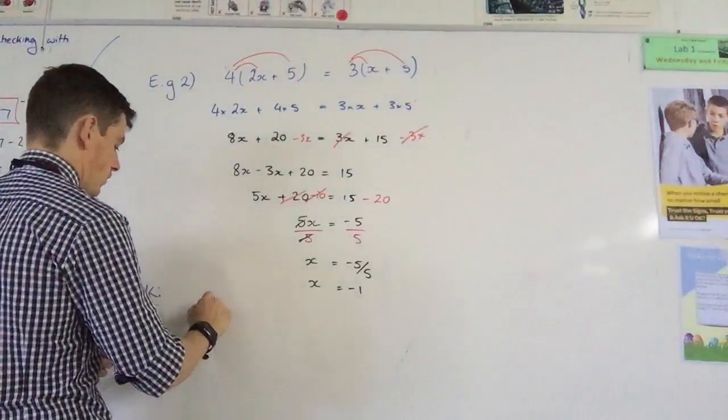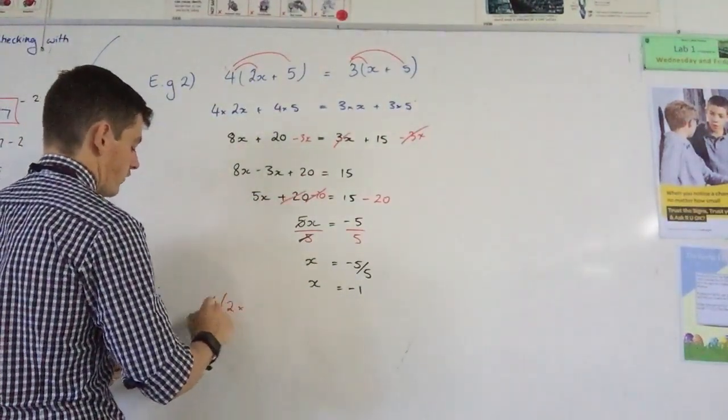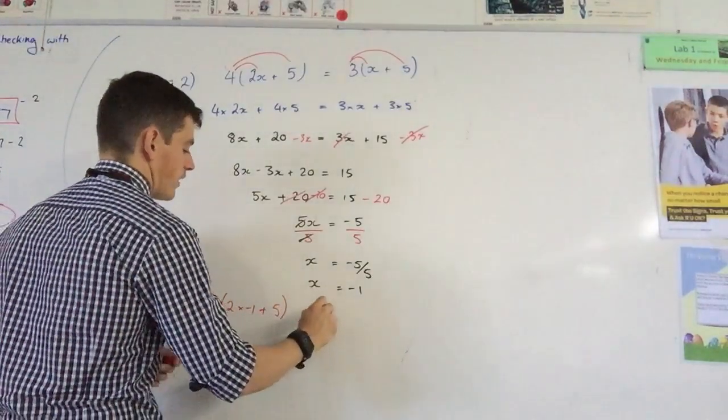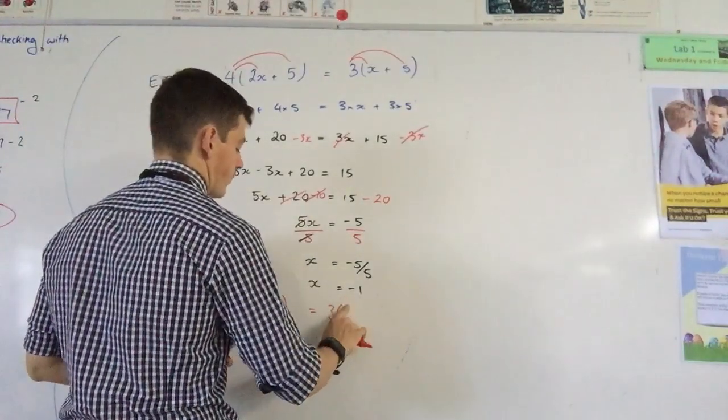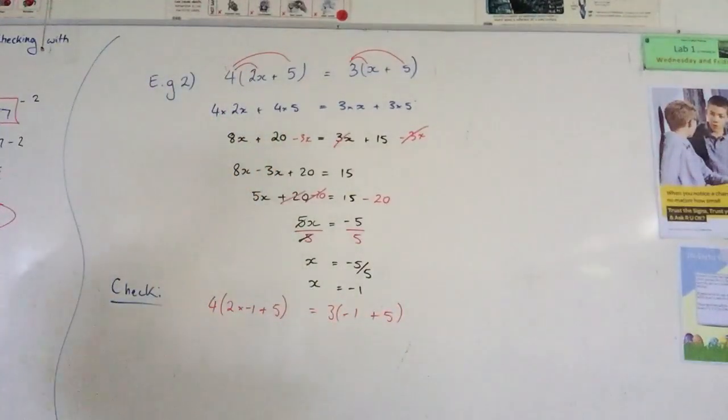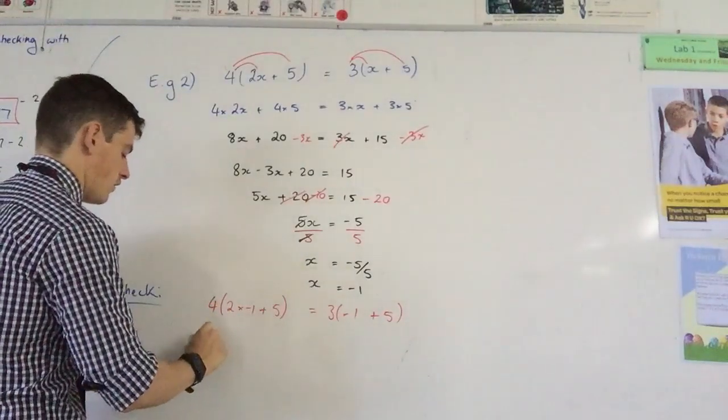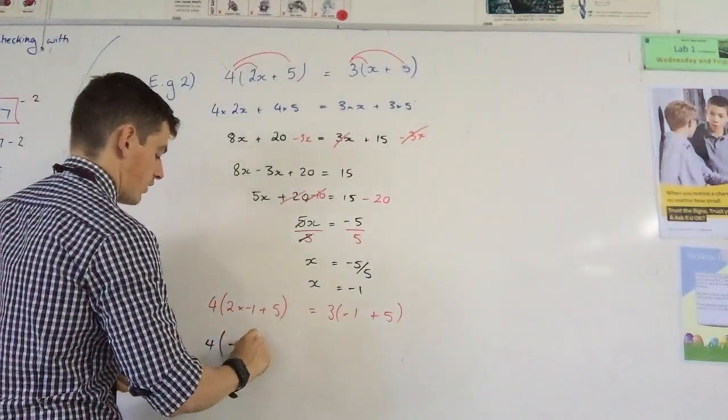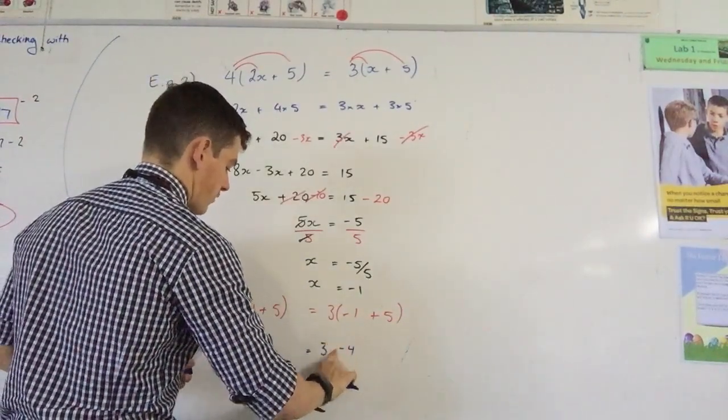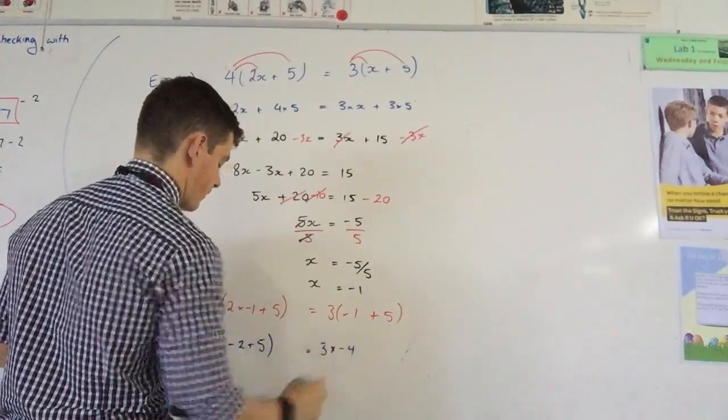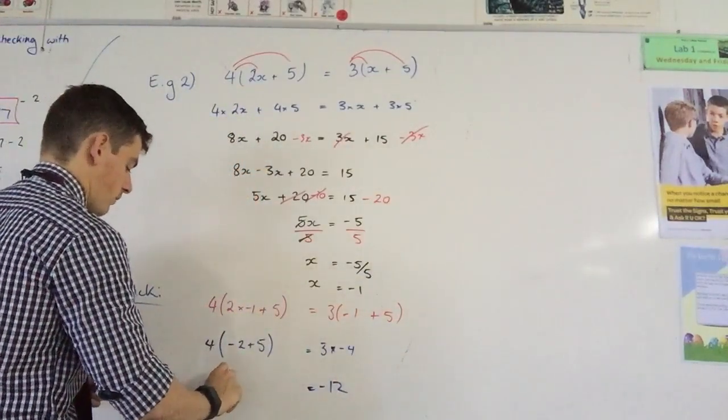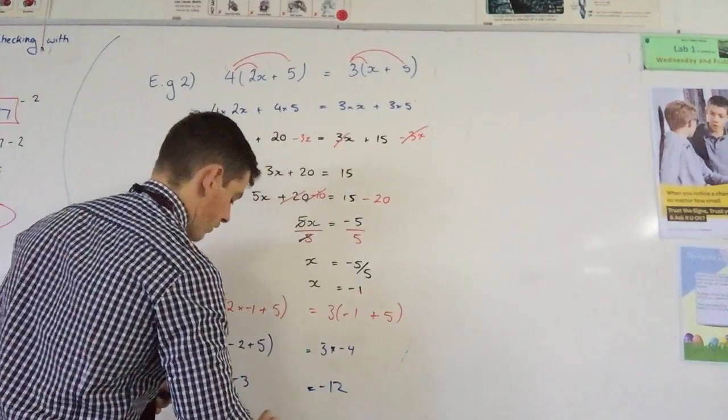So what I've got is 4 times, 2 times negative 1 plus 5, all in brackets, equals 3 times negative 1 plus 5. You can do this in the blue below. So I'm going to simplify this bracket first. So 4, negative 2 plus 5 equals 3 times negative 4. I can actually write that straight up as times. There's nothing else going on. So I've got negative 12 equals 4 times negative 3. Negative 12 equals negative 12.